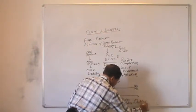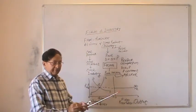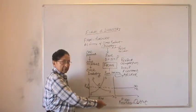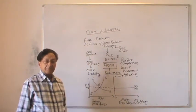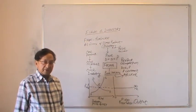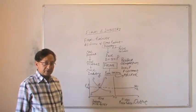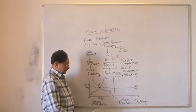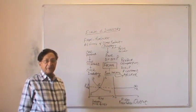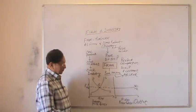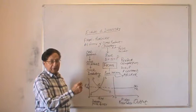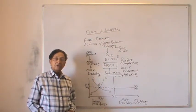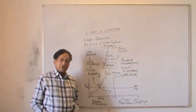A firm has to determine the output such that, if market price is given, how much a firm should produce to give maximum profit, or minimum losses, or normal profits. A firm has to take the output decision because individually a firm has no pricing policy in perfect competition. In perfect competition, price is constant because all firms deal in homogeneous products.